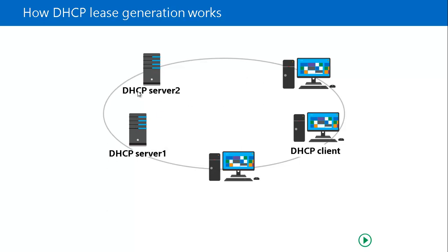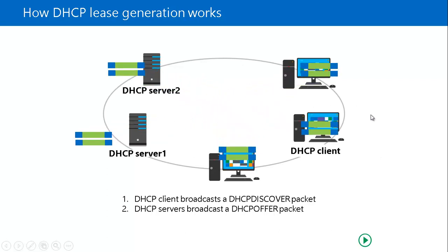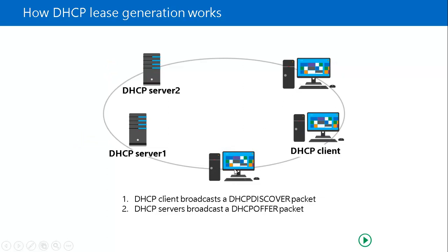Only DHCP Server 1 and DHCP Server 2 are responsible for responding to that packet. In the second step, the DHCP servers broadcast a DHCP Offer packet, indicating they have an available IP address. The other computers on the network already have IP addresses, so they discard the offer. The DHCP client, which has no IP address, receives the offer. Each server includes a reference ID so the client can identify which DHCP server is making the offer.